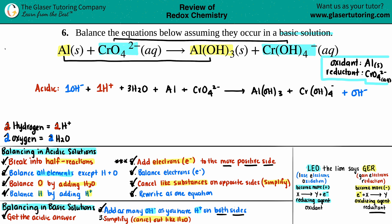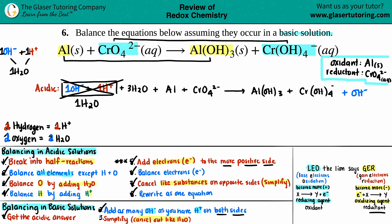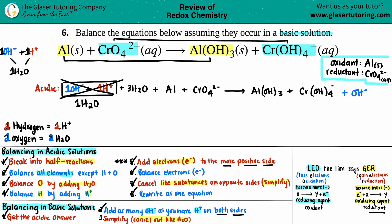Last step: simplify by canceling like waters. When a hydroxide ion combines with H⁺, you get H₂O. One OH⁻ plus one H⁺ gives one H₂O. So the H⁺ and OH⁻ on the left combine into one H₂O, and that H₂O joins the 3H₂O already on the left — giving a total of 4H₂O on the left side.